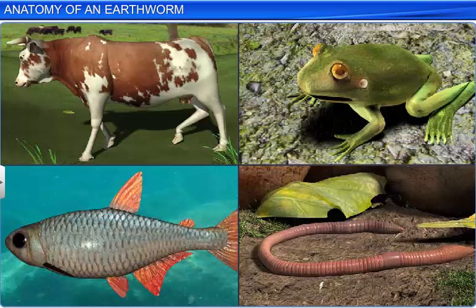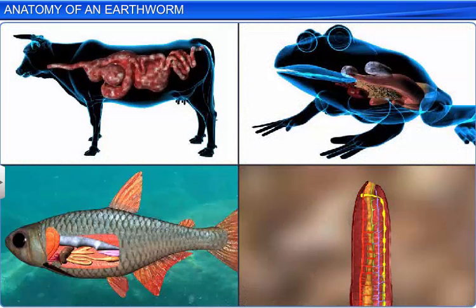Our planet is home to thousands of animals that exhibit morphological similarities and differences. Similarly, they also exhibit certain anatomical similarities and differences.